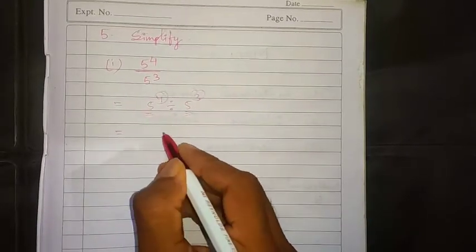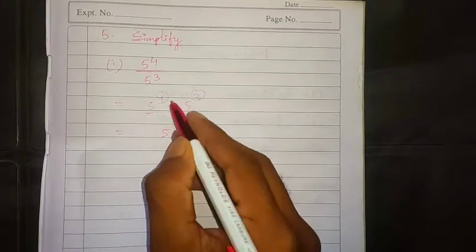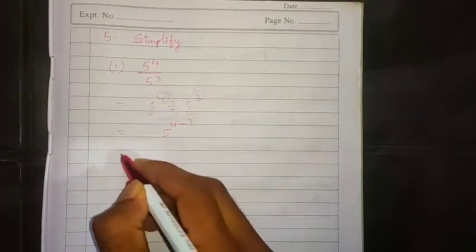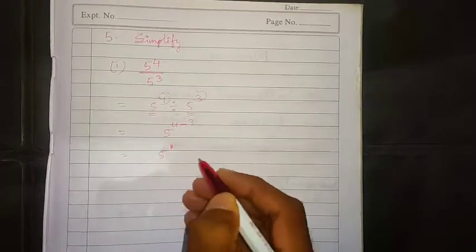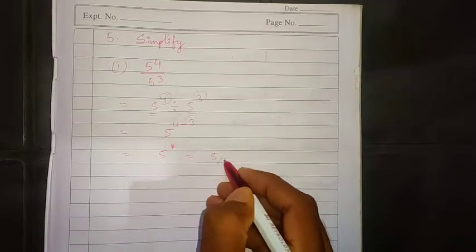So here is division. Bases are same, that is 5. And 4 minus 3, so the answer will be 5 raised to 1, that is 5.